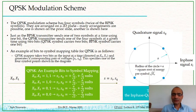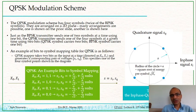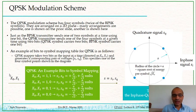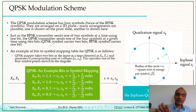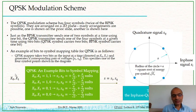For BPSK the mapping is simple: whenever you get bit one you map it to plus A, whenever you get bit zero you map it to minus A, where A is the square root of energy per bit. For QPSK, out of the incoming stream of bits you pick two bits at a time — bit one and two are mapped to a QPSK symbol, then you go to bits three and four, then five and six, and so on. These two bits are denoted as X0 and X1.